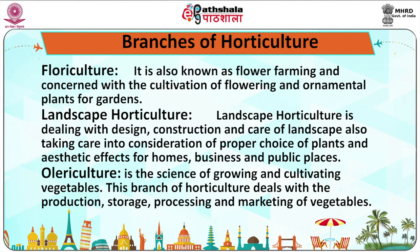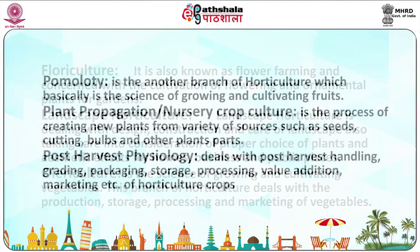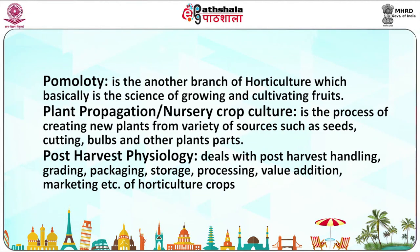Olericulture is the science of growing and cultivating vegetables. This branch of horticulture deals with production, storage, processing and marketing of vegetables. Pomology is another branch of horticulture which is the science of growing and cultivating fruits. Plant propagation is the process of creating new plants from a variety of sources such as seeds, cuttings, bulbs and other plant parts. The last branch is post-harvest physiology, which deals with post-harvest handling, grading, packaging, storage, processing, value addition, marketing, etc. of horticultural crops.